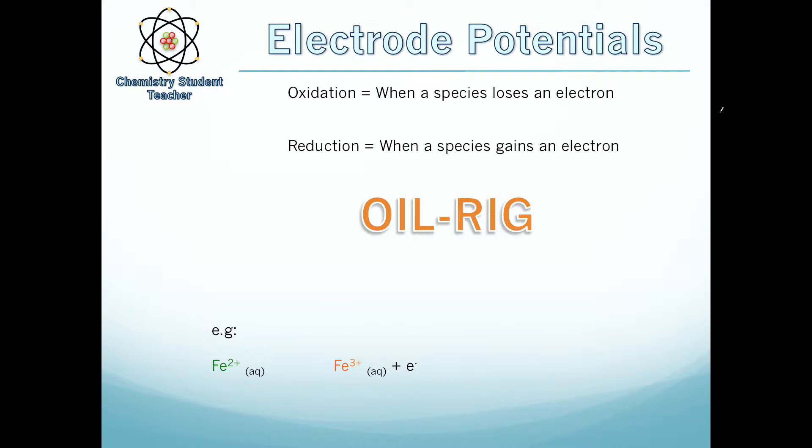A good mnemonic for remembering this is OIL RIG. Oxidation is loss when you're talking about electrons. Reduction is gain. So when you lose an electron it's OIL and you gain an electron it's RIG. Easy way to remember it.